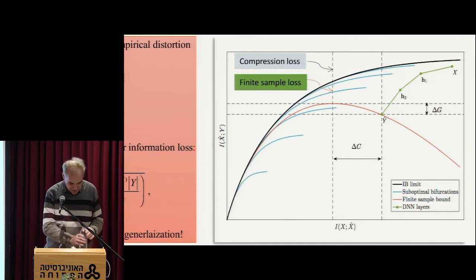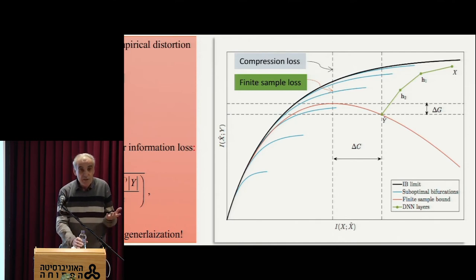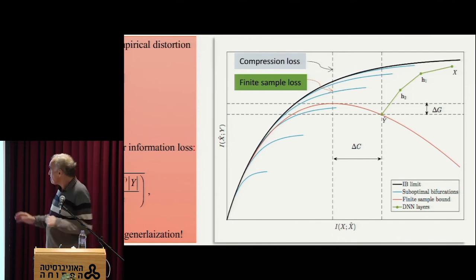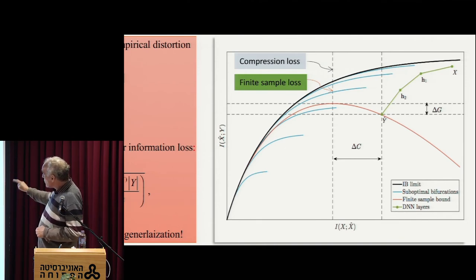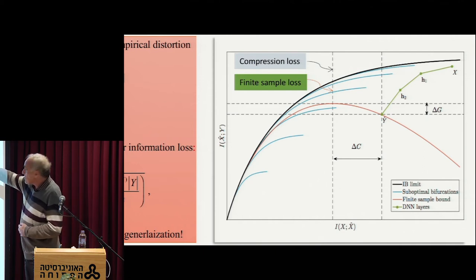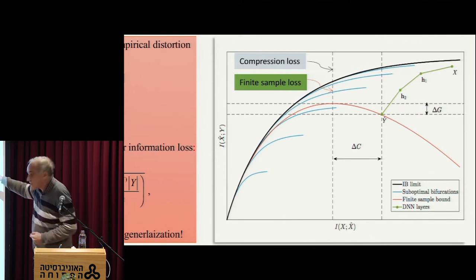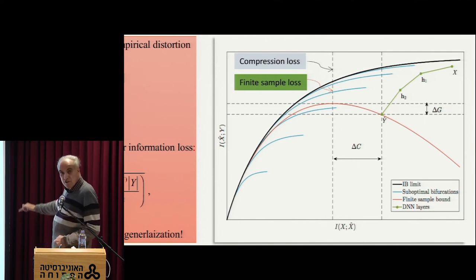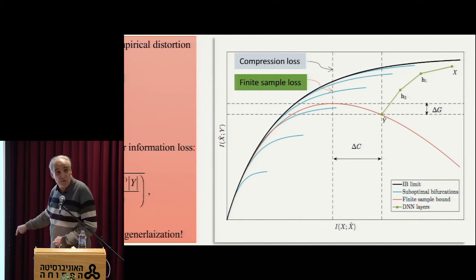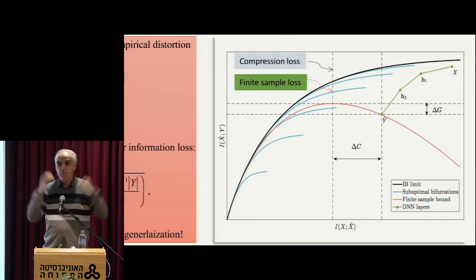This I can surprisingly calculate just from the joint distribution of X and Y. This black limit is exaggerated here — usually it can be a lot closer to the top, but it's always there. This is the best you can do with any algorithm. So our brain or any alien's brain cannot do better than this black line. This is a property of the problem, not of the algorithm. It's an algorithm-independent bound.